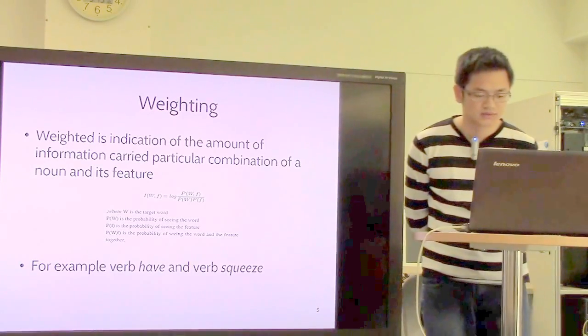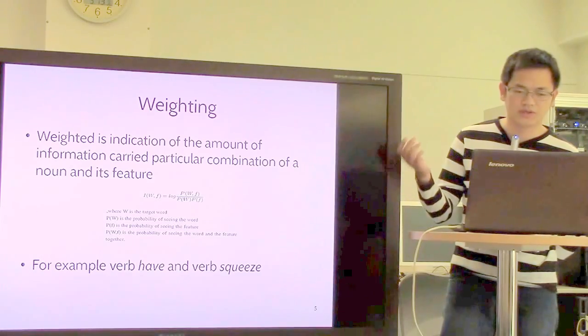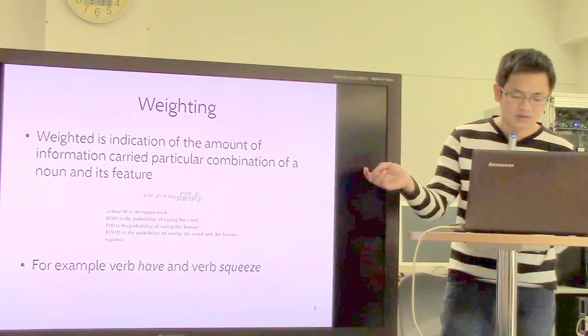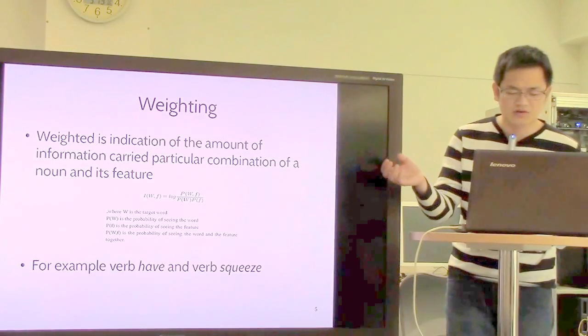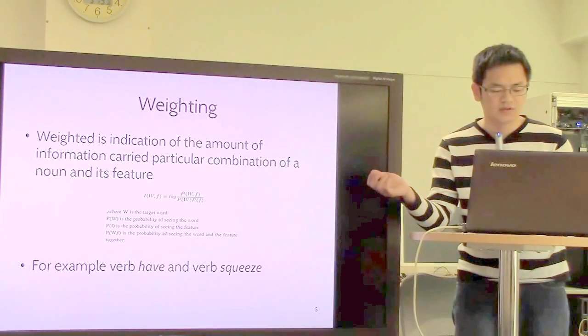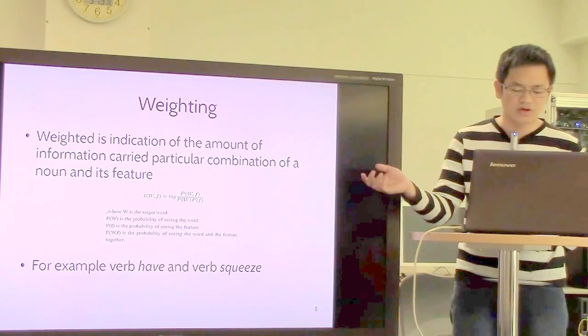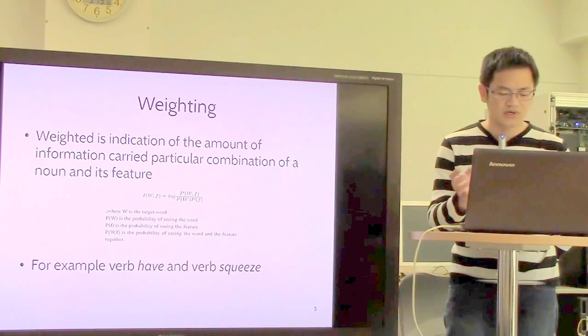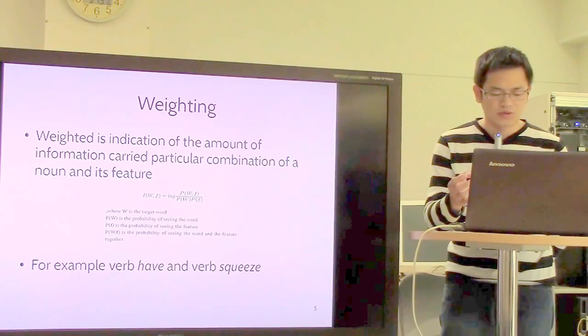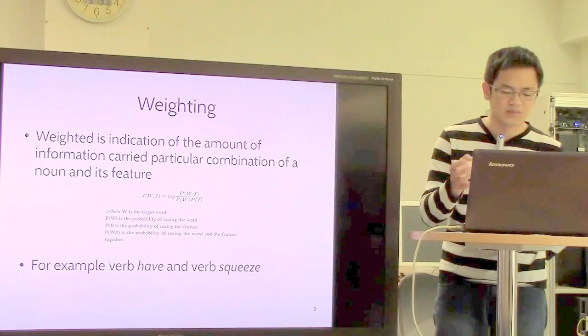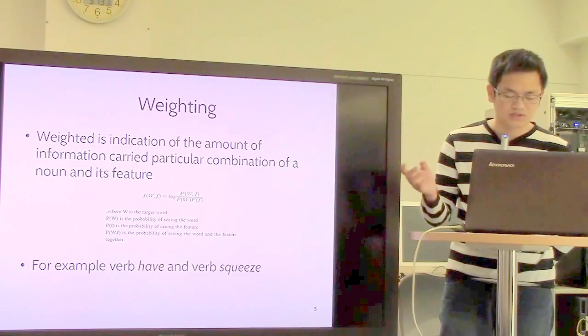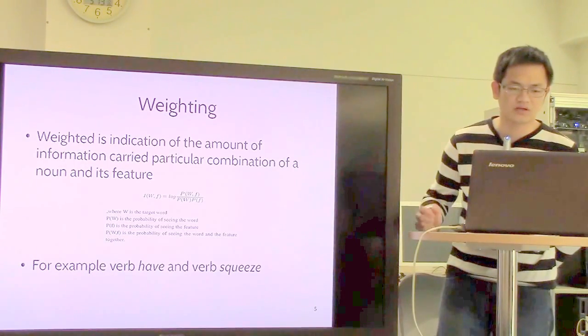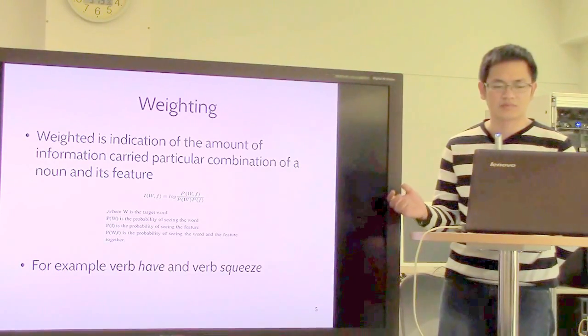Now for weighting. I will explain how we need to use weighting. For example, we have two verbs: hold and squeeze. As we know, a large number of nouns can occur as subjects of the verb hold, but only a few nouns may occur with the object squeeze. So if we have two nouns both occurring with the subject of the verb hold, we will learn less about their semantic similarity than if two nouns both occur with squeeze. We use the weighting score as an indication of the amount of information carried by a particular combination of noun and its feature.